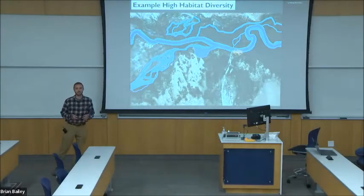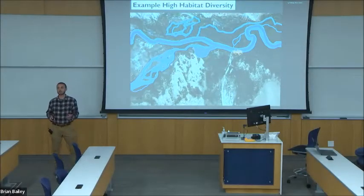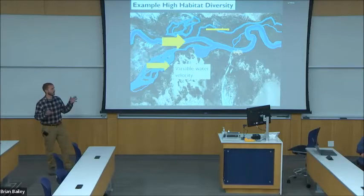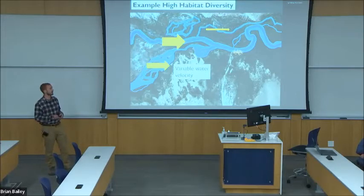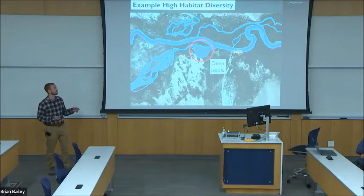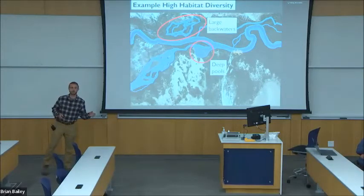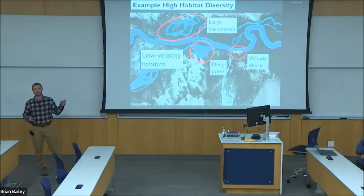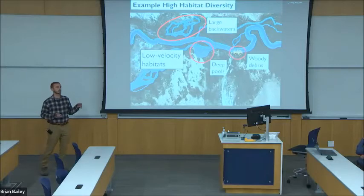Rivers with high habitat diversity are often characterized by a complex overall structure consisting of multiple channels. These provide variable water velocities for fish across different habitat types, and some examples of diverse habitats include deep pools, large backwaters, and woody debris. These specific examples are all examples of low-velocity habitats, which are theorized to be very important for many fish's life cycles.